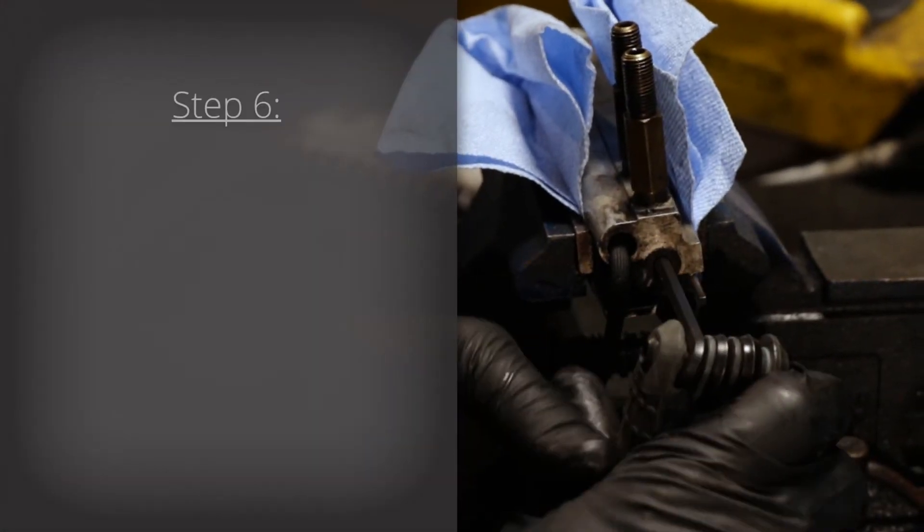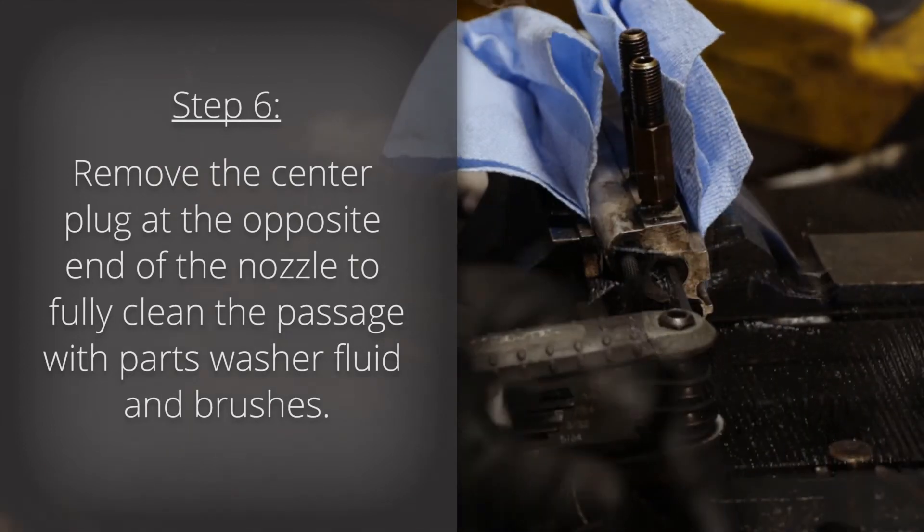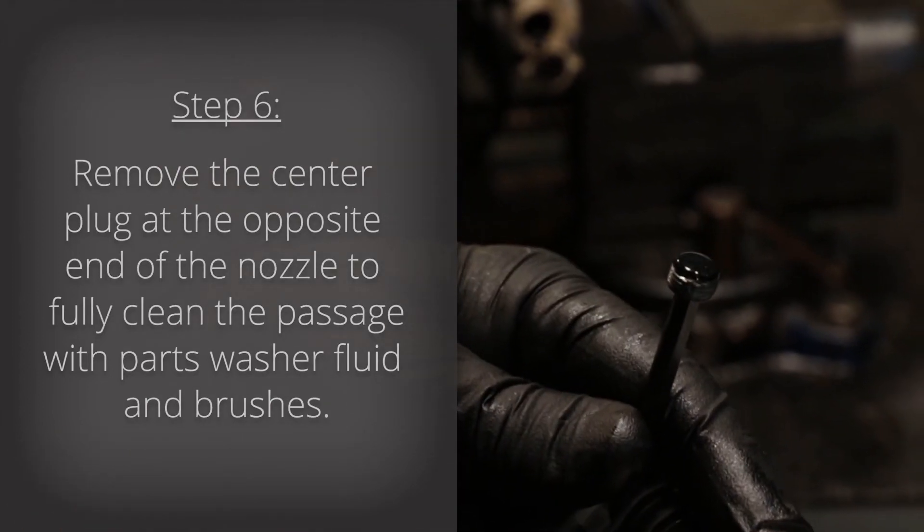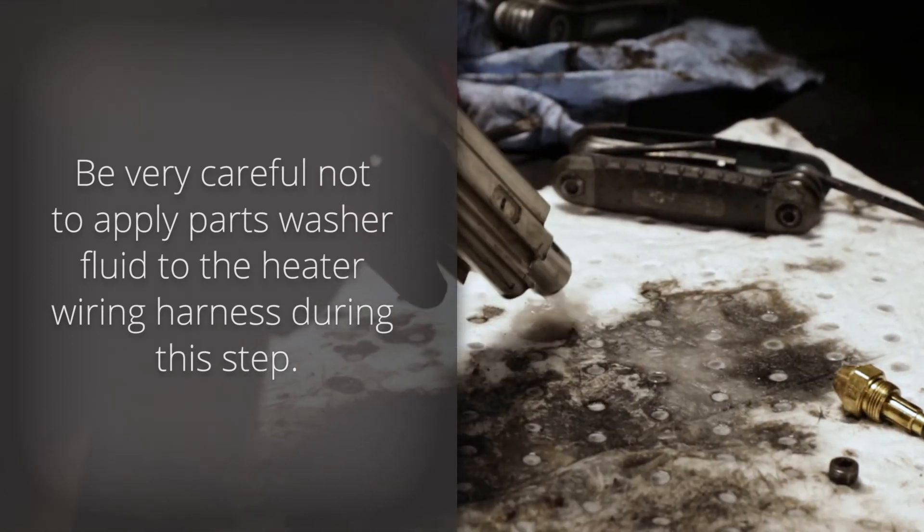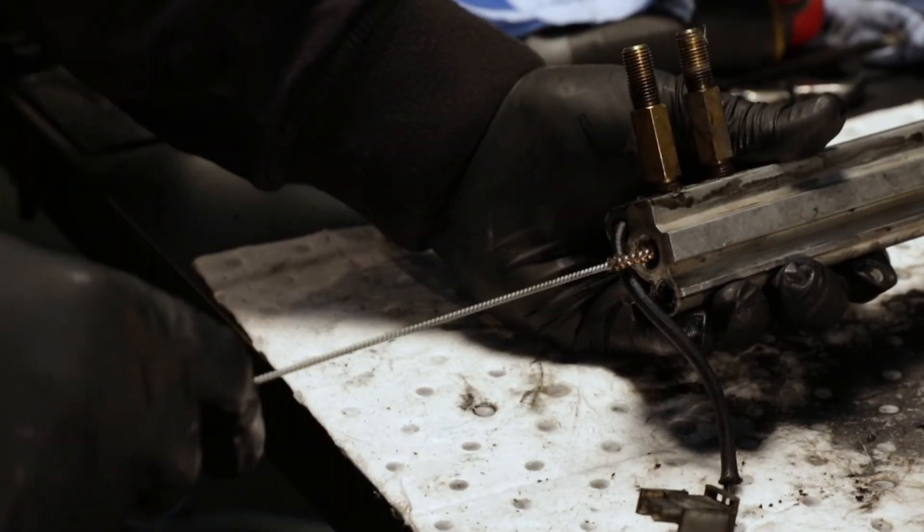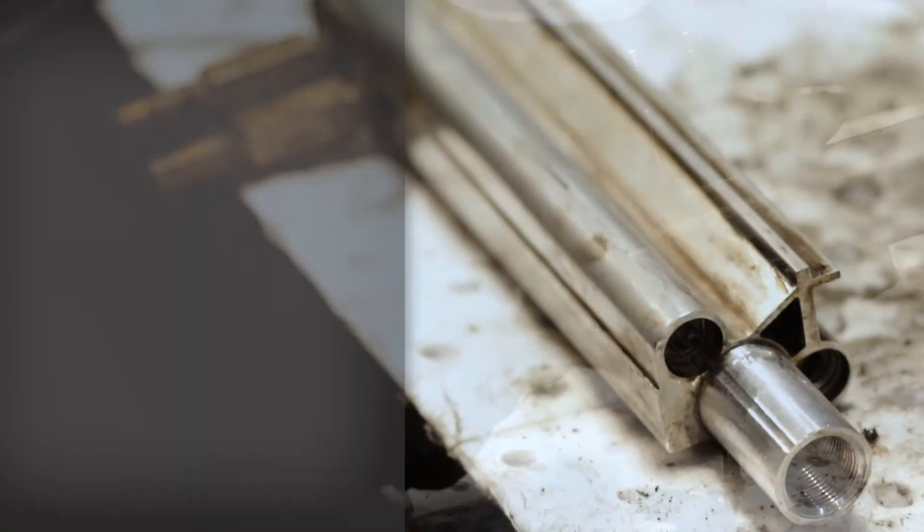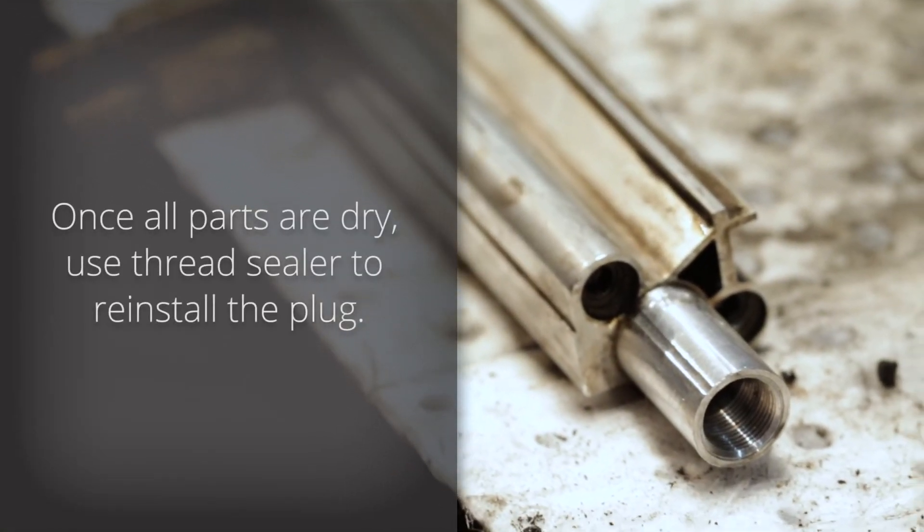Step 6. Remove the center plug at the opposite end of the nozzle to fully clean the passage with parts washer fluid and brushes. Be careful not to apply parts washer fluid to the heater wiring harness during this step. Once all parts are dry, use thread sealer to reinstall the plug.